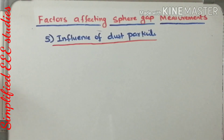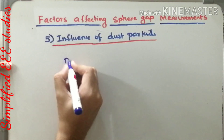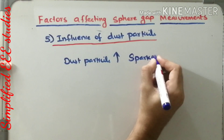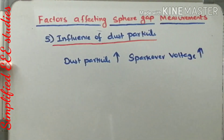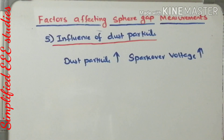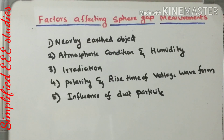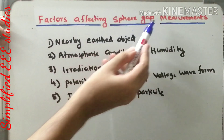Now the fifth parameter — the influence of dust particle. The presence of dust particles induces changes in spark over voltage. Whenever you are doing sphere gap measurement, make sure that the spheres and all arrangements are clean. The presence of dust particles may cause early dielectric breakdown, giving wrong readings. Make sure all surfaces of the spheres are cleaned well before doing the measurement. The influence of dust particle is also an unavoidable factor.